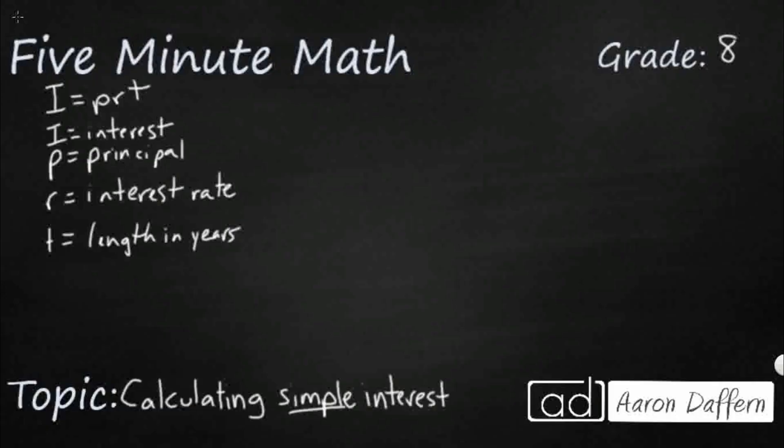So a sample problem might be something like this. You've got $3,000 invested, so there's your principal. And you have simple interest at 4.5% over four years.